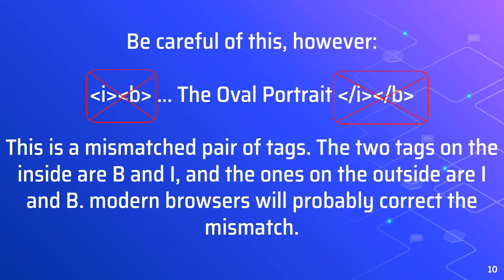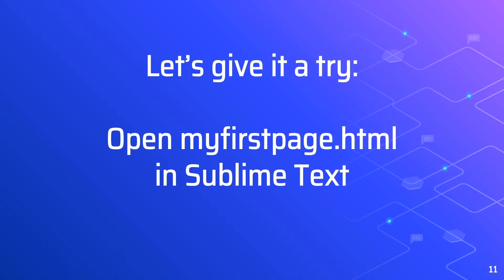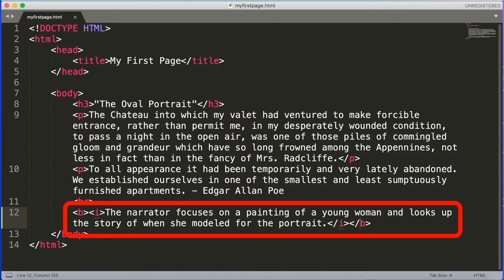So let's give it a try. Go to your htdocs folder and locate myfirstpage.html, then open it in Sublime Text. Once you have opened it, we'll apply the bold and italic tags. Sublime Text will save after you add that information, and we can view the result in the browser. That looks good.